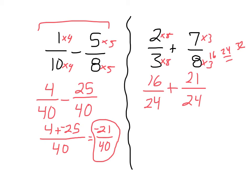So 21 plus 16 is 37, so it's 37 twenty-fourths. This cannot be reduced by dividing the numerator and denominator by a common factor, but it can be reduced because it's an improper fraction. 24 goes into 37 one time. 37 minus 24 is 13. The remainder is 13. So it's 1 and 13 twenty-fourths is my final answer.